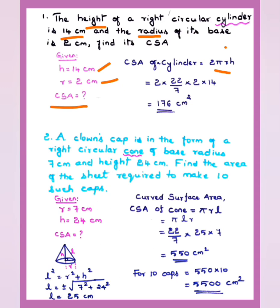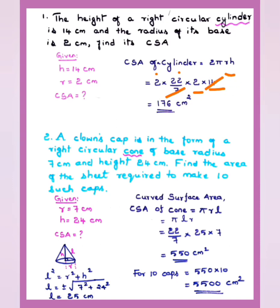Substituting: 2 × (22/7) × 2 × 14. In these numericals, substitute π as 22/7 — not 3.14 — for easier calculation. 7 cancels with 14, giving 2 × 22 × 2 × 2 = 176 cm². The final answer is 176 cm².